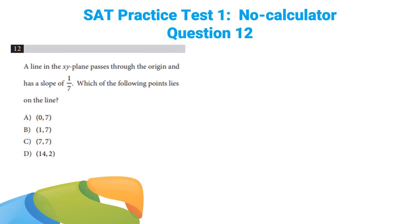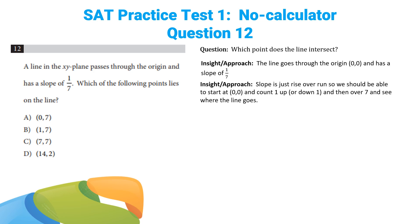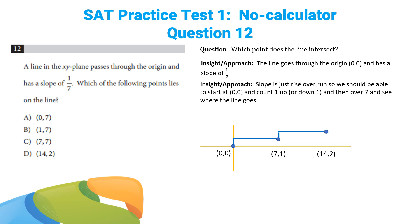Question 12: a line in the XY plane passes through the origin and has a slope of 1/7. Which of the following points lies on the line? Slope is just rise over run, so a slope of 1/7 means count up 1 and go over 7. The best way to do these is just draw a graph. Starting at the origin, going up 1 and over 7 puts us at (7, 1) — not an answer choice. Go another step: up 1 and over 7 more puts us at (14, 2) — that is answer choice D.